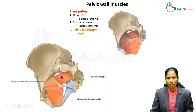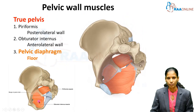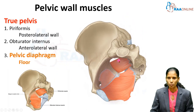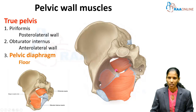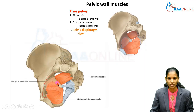Apart from these two ligaments, there are two more muscles. Posterolaterally, the wall is bounded by the piriformis muscle, and anterolaterally by the obturator internus muscle. The piriformis muscle takes origin from the anterior surface of the sacrum and leaves the true pelvis through the greater sciatic foramen to enter the gluteal region. The obturator internus takes origin from the inner aspect of the obturator membrane and leaves the pelvic cavity through the lesser sciatic foramen.